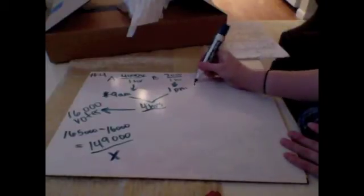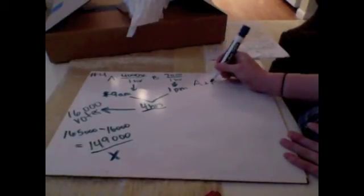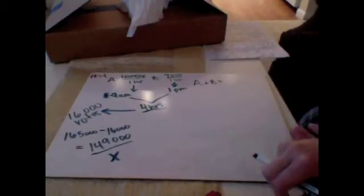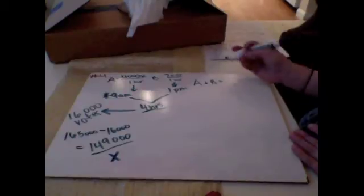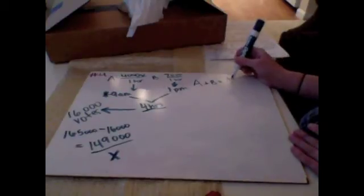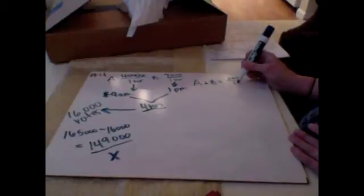So the next thing I need to do is I need to figure out what their rate is together, of A plus B. Well, A plus B, they're already having the same denominator. So together, they can count 11,000 votes in one hour.